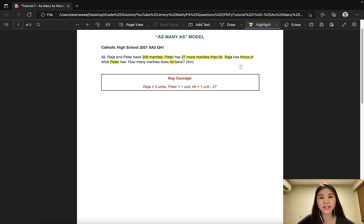The keyword here is thrice. Thrice means three times. That means Raja has three times as many marbles as Peter. Therefore, Raja would have three units on his model while Peter would have one unit. Now, since Peter has 27 more marbles than Ali, that would mean Ali's unit is less than one full unit by 27. So let's go ahead and draw the model.